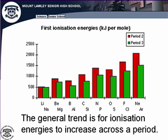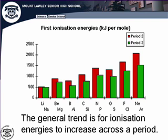When we look at trends across a period — the second period elements in brown and third period elements in green — the general trend is for ionization energy to increase across a period. As you go across a period, nuclear charge increases while outer electrons are added to the same principal energy level, so they're approximately the same distance from the nucleus with no extra electron shielding. However, there are a few anomalies — for example, between beryllium and boron.